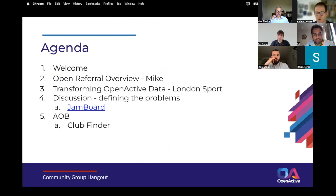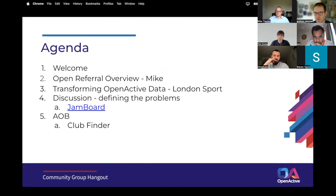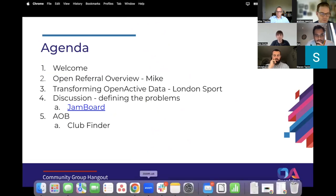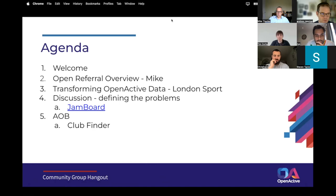We'll come back to those problem statements at the next meeting and start to define requirements and patterns that could help solve them. We've also got an item of AOB today — Howard would like to have a brief chat about club finder functionality. I'd like to start by handing over to Mike Thacker, who is the lead for Open Referral UK, to give a 10–15 minute introduction to Open Referral.